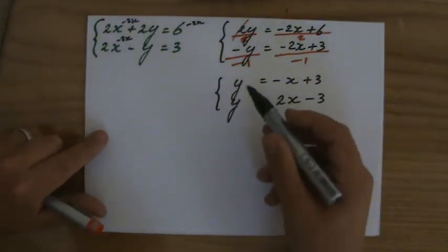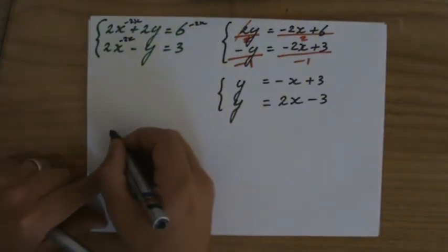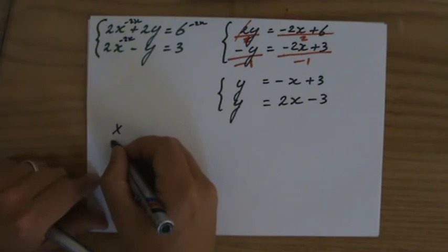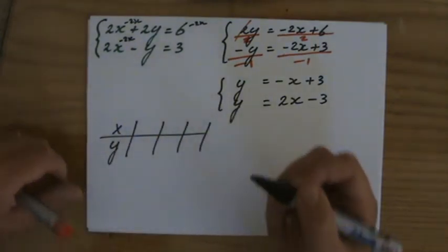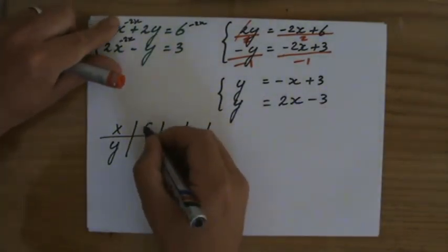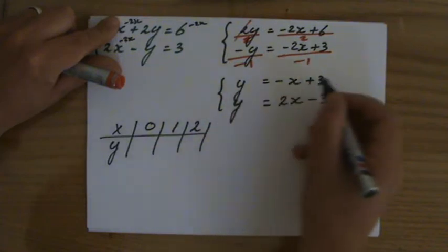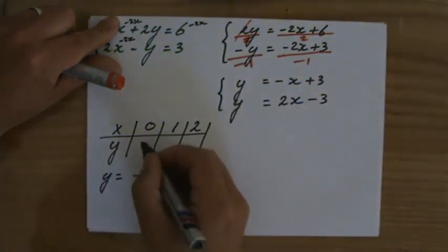Okay, so the first one, I'll make a table. x, then y. You have three points. You only need two, but a third one just to check yourself. Let's do 0, 1, 2 for x. Now what is y going to be? When x is 0, minus 0 plus 3, that's 3.